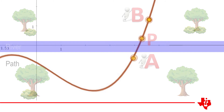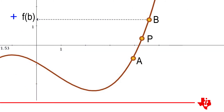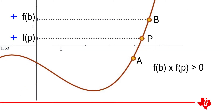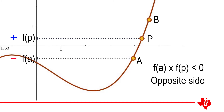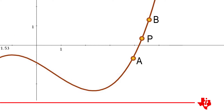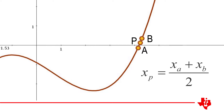In mathematics, we calculate the product of the y-coordinates to determine if the points are on the same or opposite sides of the x-axis. If the function is continuous, just like our path, we can progressively narrow in on the point where the function crosses the axis. In the bisection method, the location of point P is not random — as its name suggests, P is halfway between A and B.